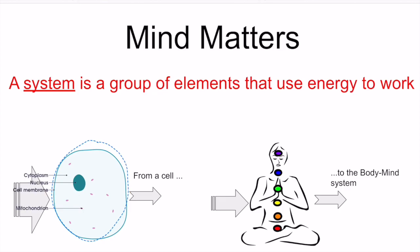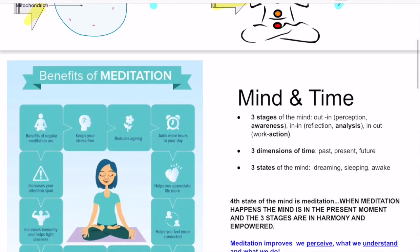And we have to start by understanding this idea of a system. This is the first concept. From a cell to a body-mind system. What is a system? A group of elements that uses energy to work. So the concept system, the concept energy and the concept work are connected to each other. It's like a circular definition. Energy is the input of the system. Work is the output of the system. So through interacting with the environment, a cell works. Through interacting with the environment, a human being works. So input energy, output work.